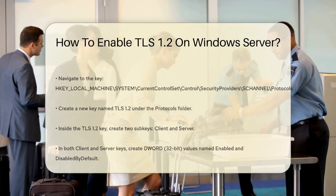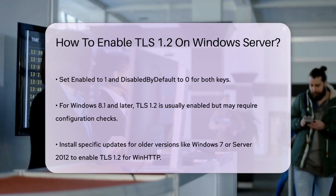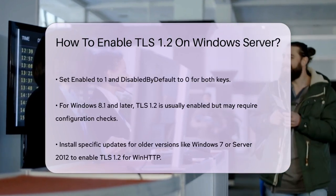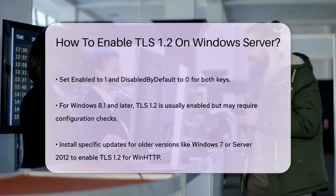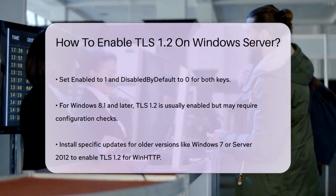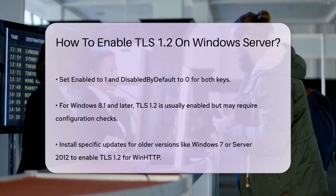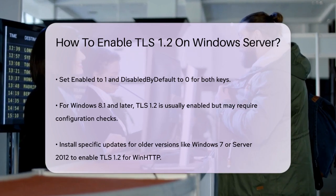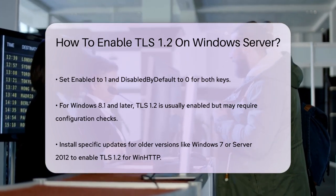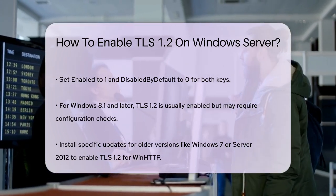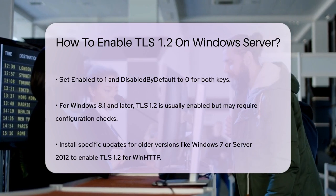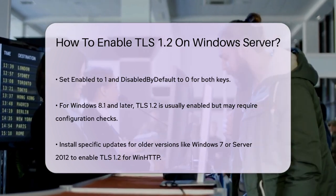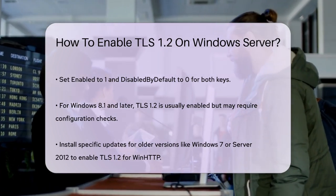Update and configure the .NET Framework to support TLS 1.2. For .NET Framework versions before 4.6.2, you may need to install updates and set specific registry values. For instance, set the SystemDefaultTlsVersions and SchUseStrongCrypto registry settings to enable strong cryptography.